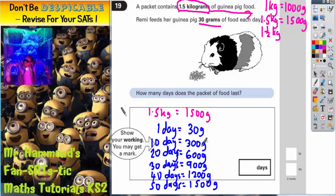So all I've done is every time I've gone up 10 days I've added on an extra 300 grams until I've got to 1,500 grams. And as we said earlier, 1,500 grams is what 1.5 kilograms is. So there's our answer. It would take 50 days. The packet of food would last 50 days to make 1,500 grams which is also 1.5 kilograms.